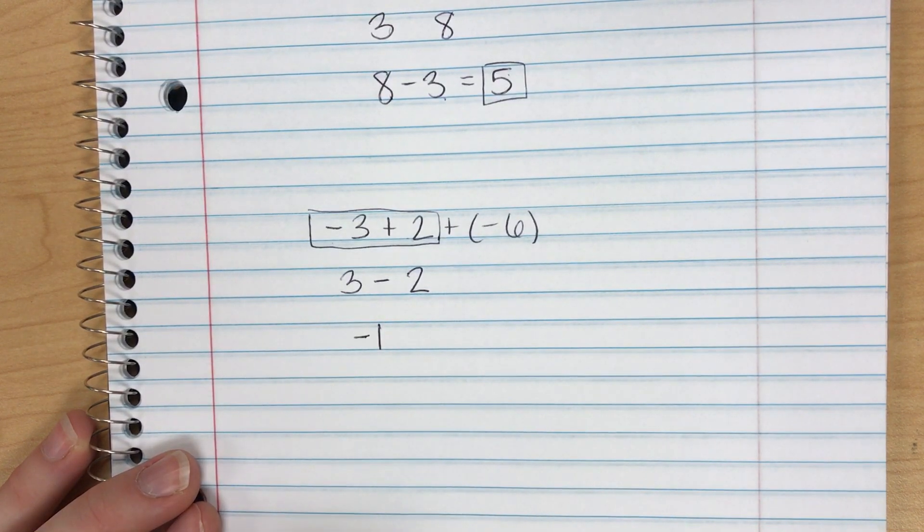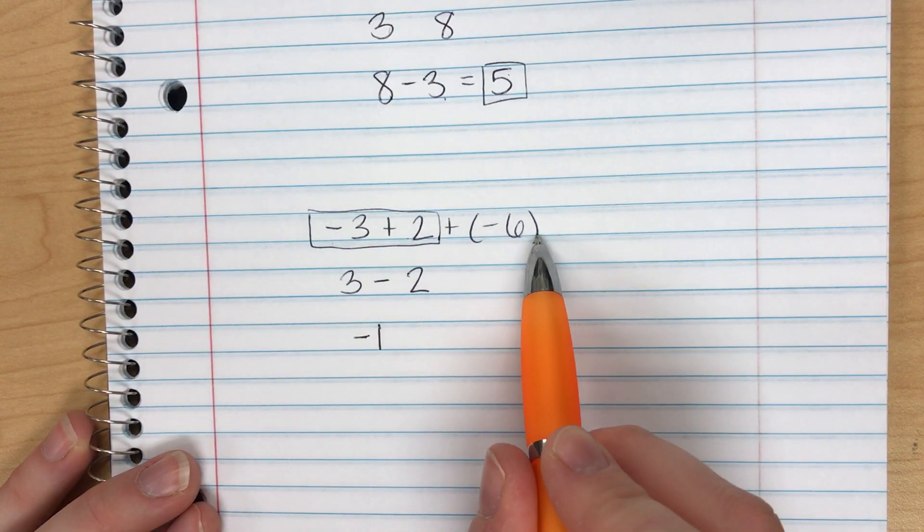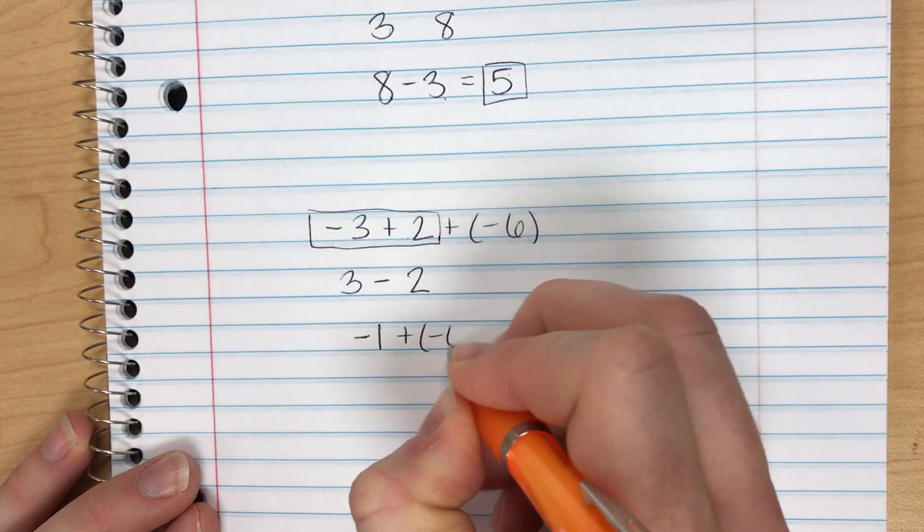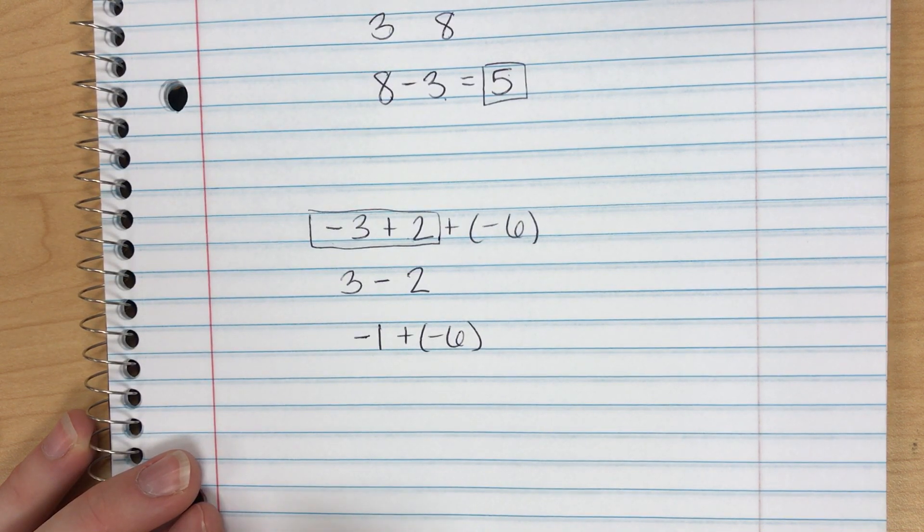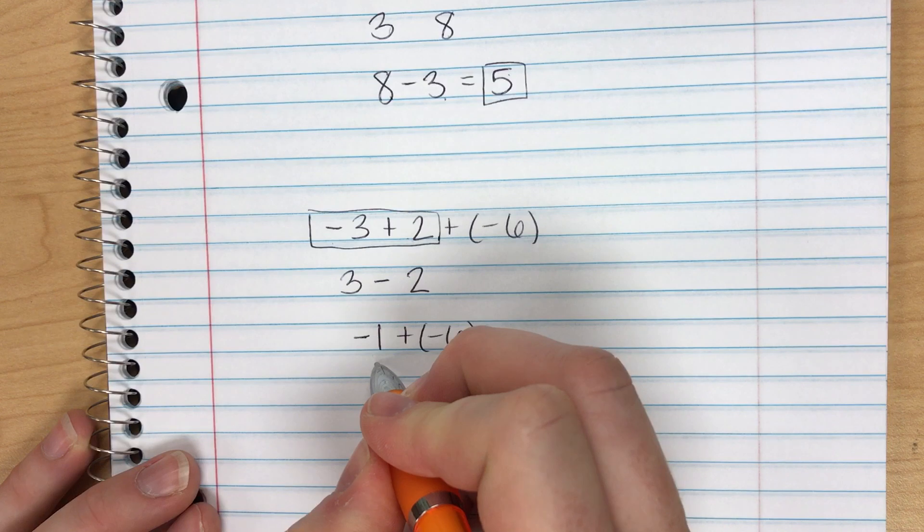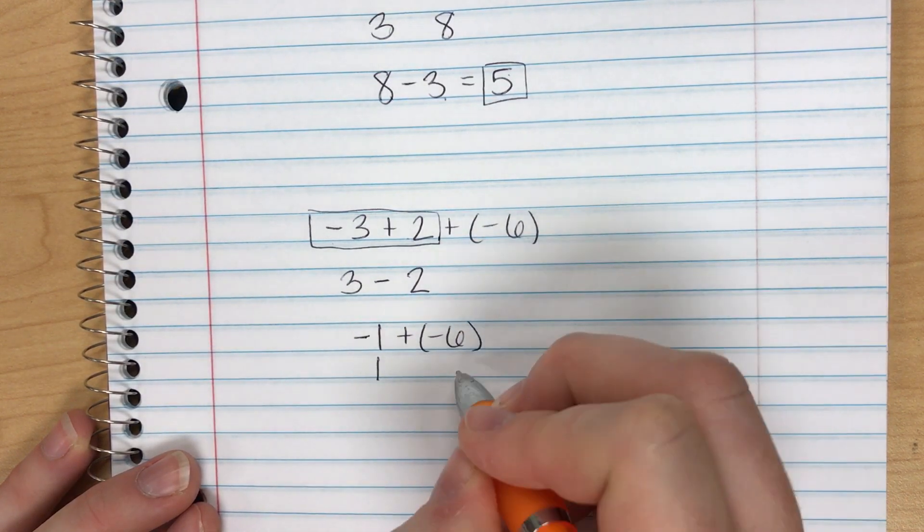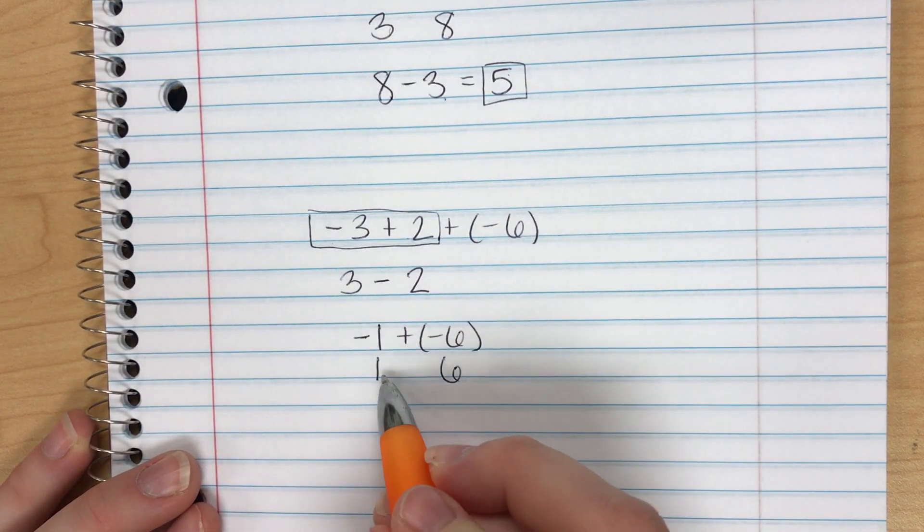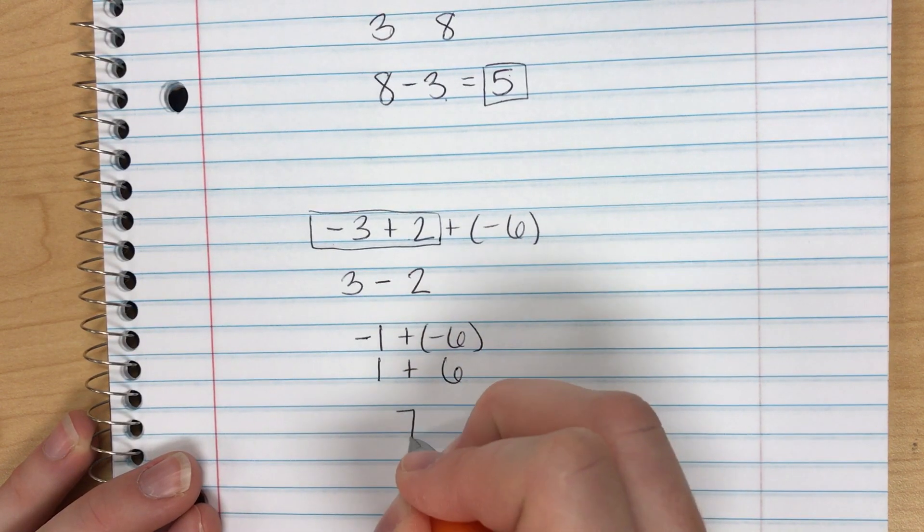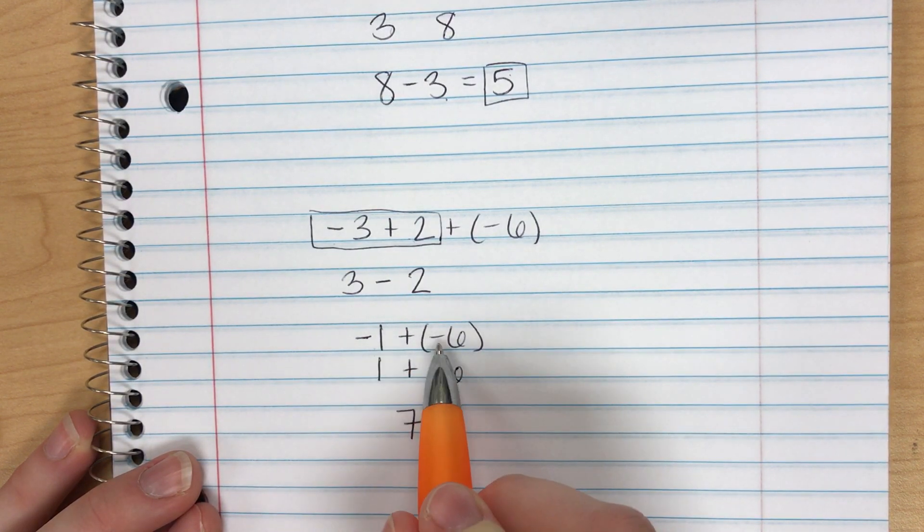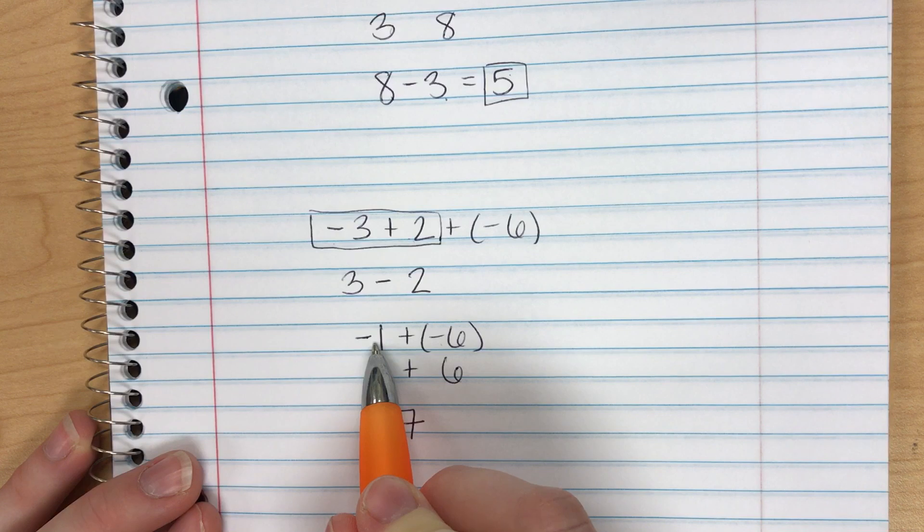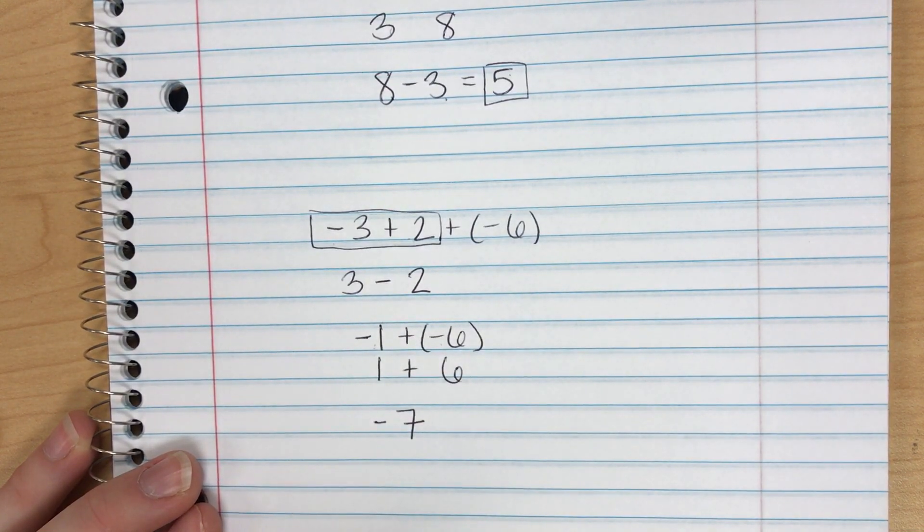Since I have negative 1 here I'm going to finish the rest of my problem by adding negative 6. I look at my signs and they're the same. So I'm going to follow the rules for same signs. Absolute value is 1. Absolute value is 6. 1 plus 6 gives me 7. Is it positive or negative? It's going to be negative. I look back at my original two numbers and they're both negative. So my answer has to be negative 7.